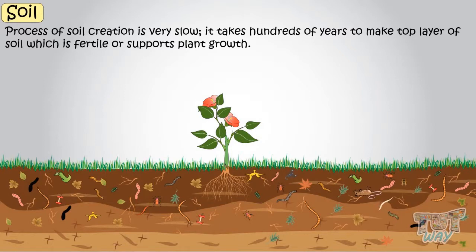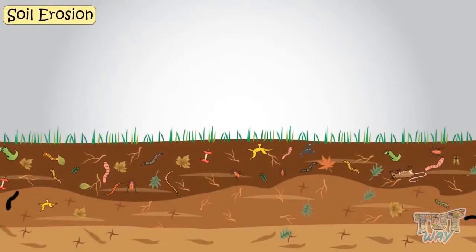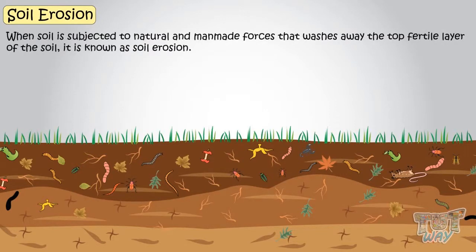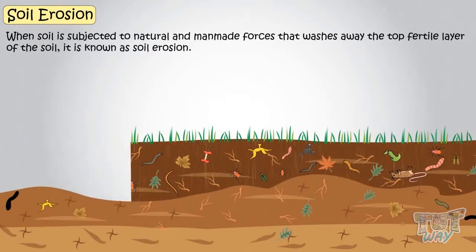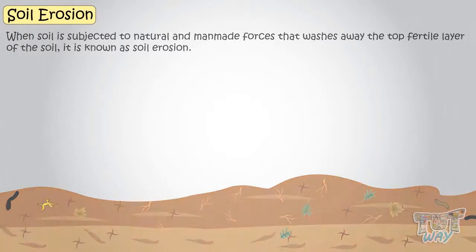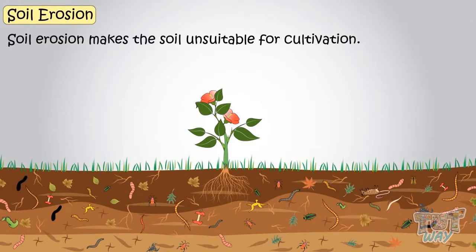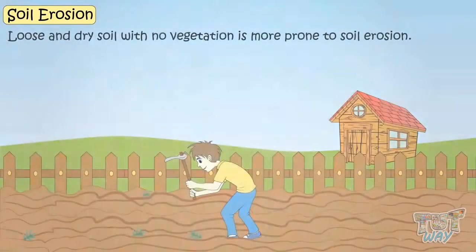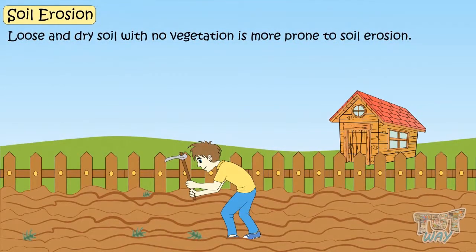Now let's learn what soil erosion is. When the soil is subjected to natural and man-made forces that wash away the top fertile layer of soil, it is known as soil erosion. Soil erosion makes the soil unsuitable for cultivation. Loose and dry soil with no vegetation is more prone to soil erosion.